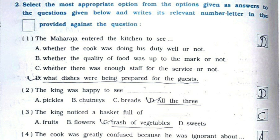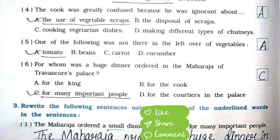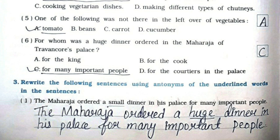Now we'll see MCQs. First: The Maharaja entered the kitchen to see — it is option D: what dishes were being prepared for the guests. Second: The king was happy to see — option D: all the three. Third: The king noticed a basket full of — option C: trash of vegetables. Fourth: The cook was greatly confused because he was ignorant about — option A: the use of vegetable scraps. Fifth: One of the following was not there in the leftover of vegetables — option A: tomato. Sixth: For whom was a dinner ordered in the Maharaja of Travancore's palace — option C: for many important people.